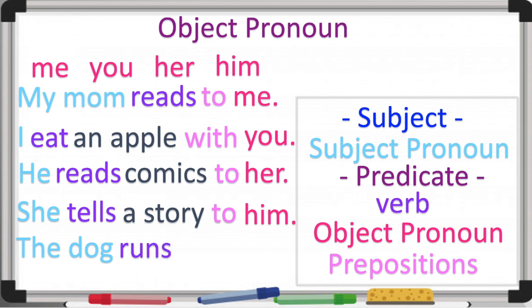'The dog runs fast to catch it.' So we have two verbs here — that's a compound predicate. Our object pronoun comes after a verb: 'catch it.' What is 'it'? It can be a ball, a branch, or a toy — something like that.